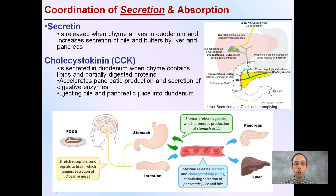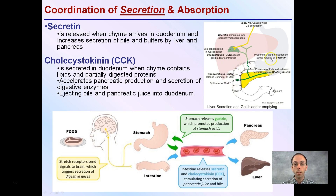Looking first at secretion, we have secretin, and this is released when chyme arrives in the duodenum and increases the secretion of bile and buffers by the liver and pancreas. Here's our duodenum — we have just left the stomach, and this secretin is starting a cascading of events.